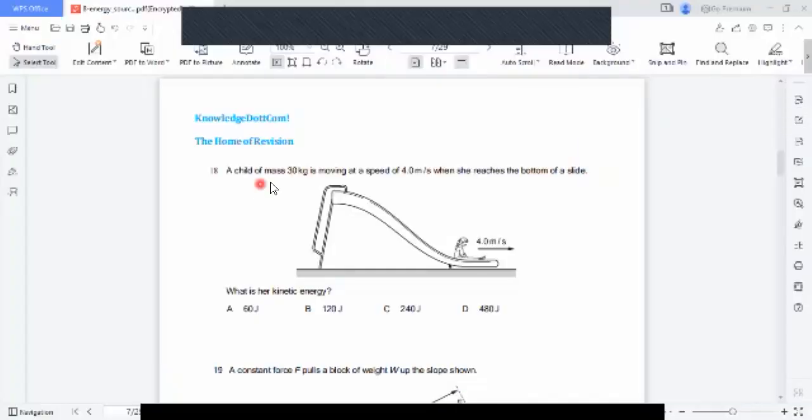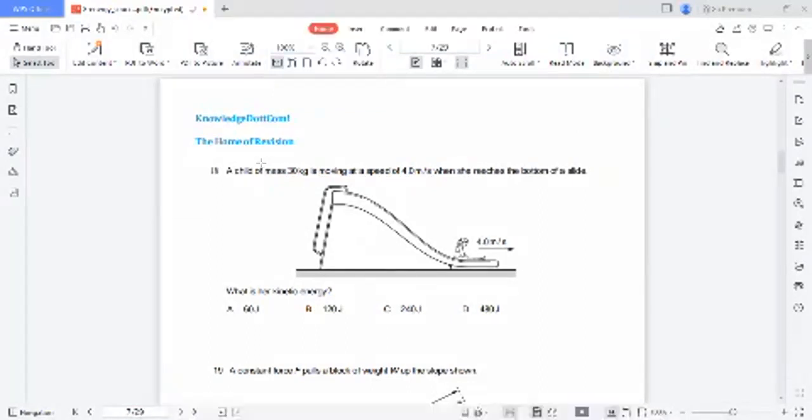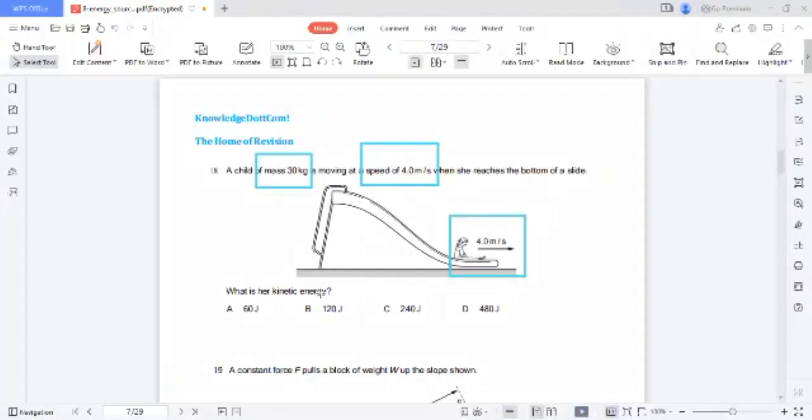A child of mass 30 kg is moving at a speed of 4 meters per second. We have mass which is 30 kg and speed which is 4 meters per second. When she reaches the bottom of the slide, here is her position. What is her kinetic energy?